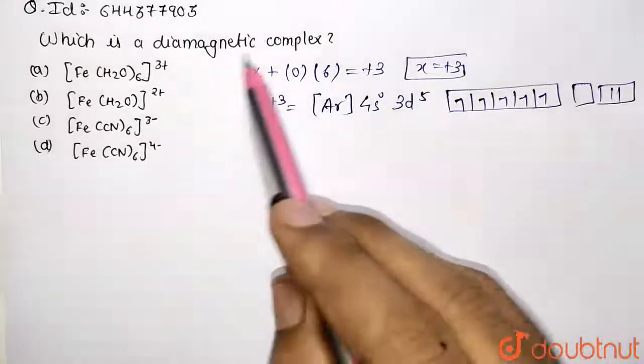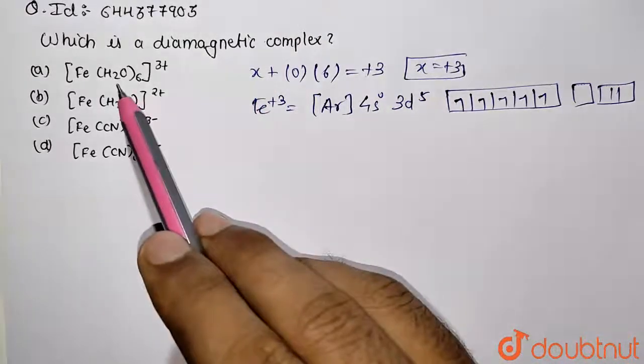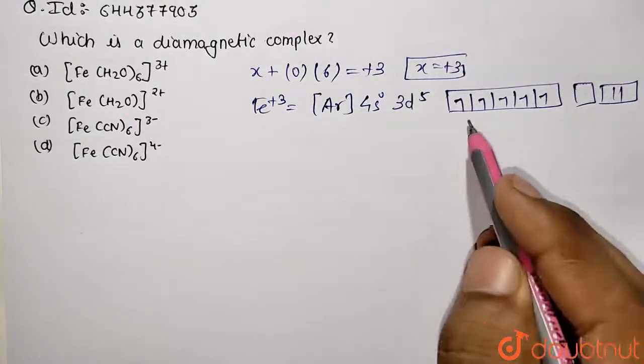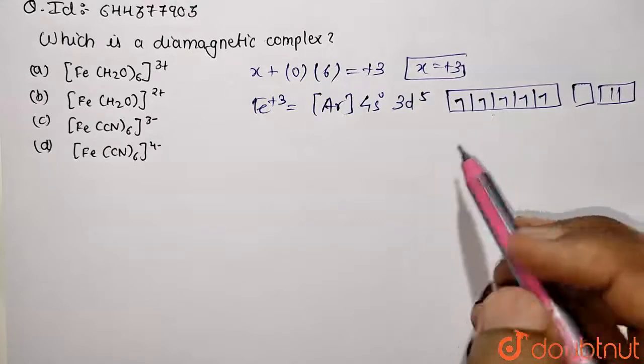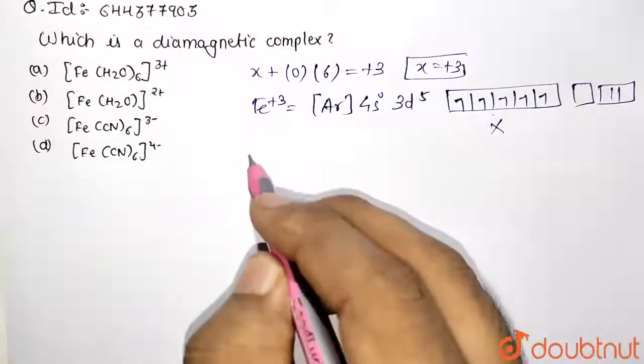Now we need to search for the diamagnetic complex, but this is going to be weak field ligand so it's not going to pair up. So it's going to be paramagnetic, so no need to check. Similarly, go with the second option, iron positive.